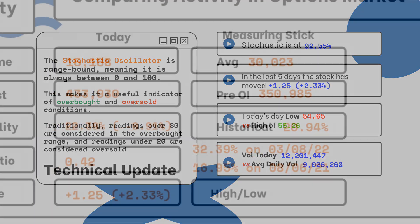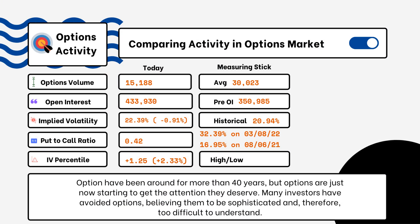We've provided details on today's option activity. What you'll be able to see here is options volume, open interest, implied volatility, put-to-call ratio, and IV percentile. One of the most popular indicators for traders is the put-to-call ratio. Anything above one indicates more bearish sentiment in the market rather than bullish. A reading of 0.5 or 0.7 tells us it's more bullish than bearish, indicating there are more calls being purchased rather than puts.